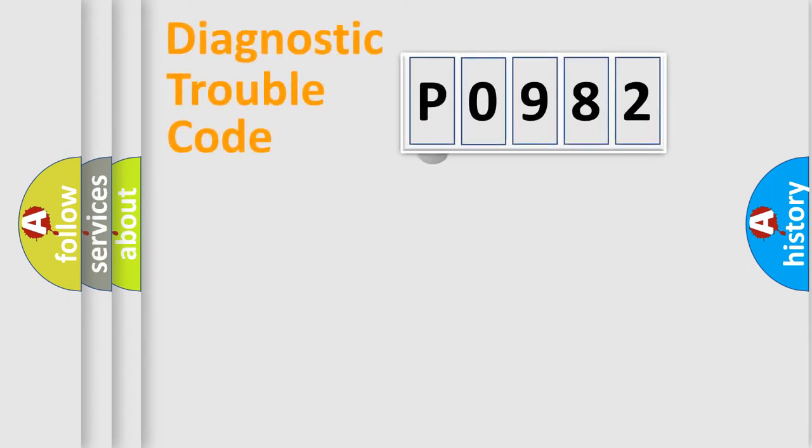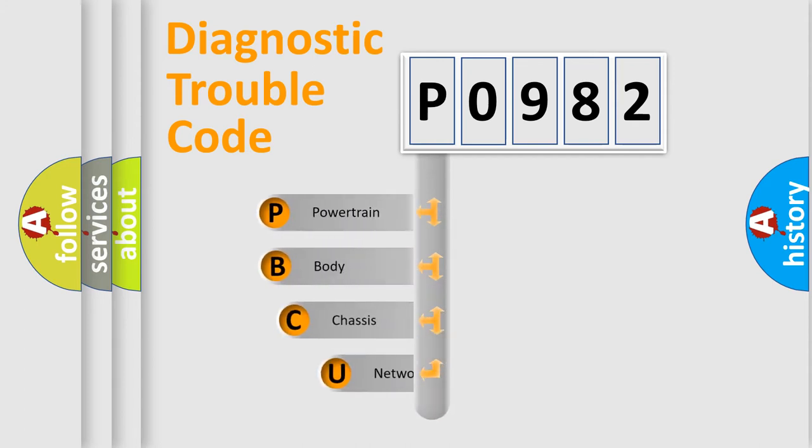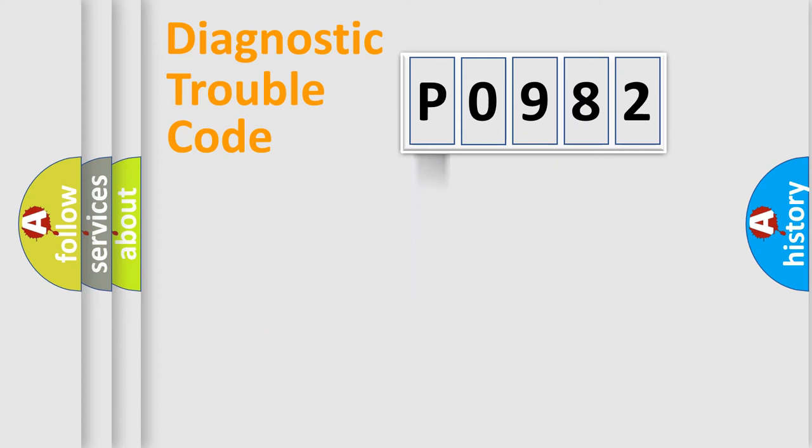First, let's look at the history of diagnostic fault code composition according to the OBD2 protocol, which is unified for all automakers since 2000. We divide the electric system of automobile into four basic units: Powertrain, Body, Chassis, Network.